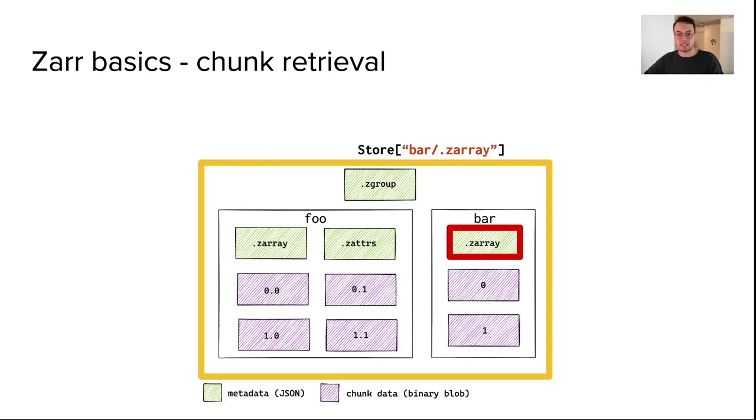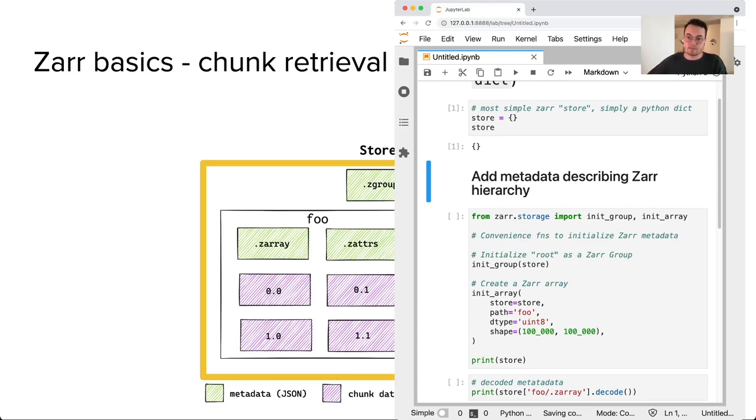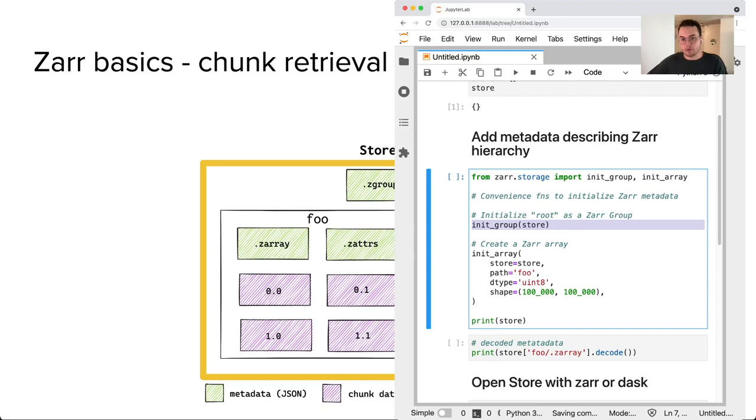We can create a store in memory just with a Python dictionary, and then fill that dictionary with key value pairs that describe the metadata for our Zarr hierarchy. We'll use these methods from the Zarr library to initialize both root metadata as a group and then add an array within our store called foo.